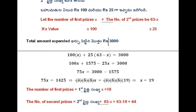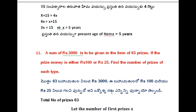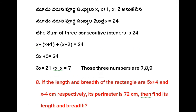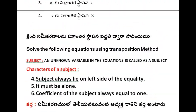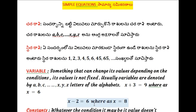The number of first prizes is 19. Number of second prizes: out of 63 total prizes, subtracting 19 gives 44. So number of first prizes are 19 and number of second prizes are 44. In this video I am providing you the complete PDF material for all types of problems in this chapter. Please subscribe.